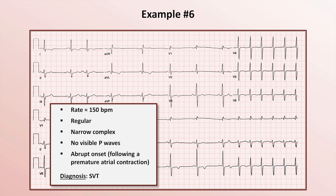With a lot of experience, you'd realize that with the very flat baseline between QRS complexes, it's highly improbable that there are tiny flutter waves hiding in there. But if you wanted to change your 99% certainty to 100%, you could perform a vagal maneuver or give adenosine to see if and how the rhythm responds.